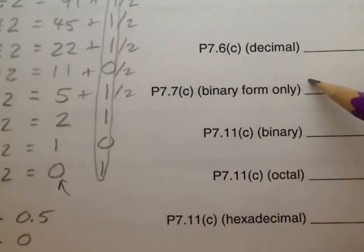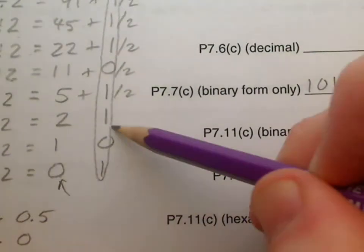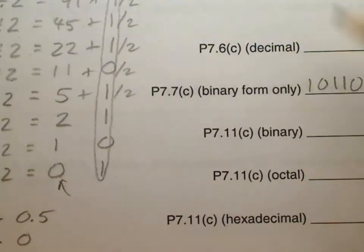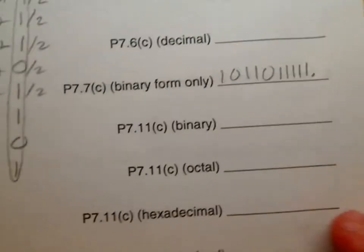So you want to start right here and you want to write 1, 0, 1, 1 and then 0 and then 5 ones after that. All right.